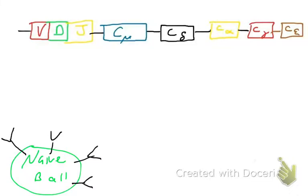I'd like to talk about how antibodies get secreted from B cells. When we talk about secretion of immunoglobulins or secretion of antibodies, that's really how B cells help fight infections — they release or secrete antibodies. Right now we've only seen immunoglobulins present on the surface of B cells. So how does a B cell go from having a membrane-bound immunoglobulin to a secreted immunoglobulin, which we commonly refer to as an antibody?